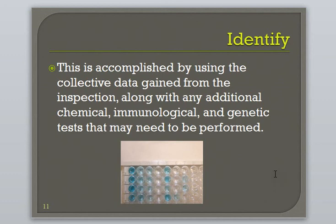The purpose of the five I's is to identify the types of microbes that were initially isolated. This is accomplished by gathering data from the inspection process as well as many other types of assays, such as ELISAs, DNA analysis, chemical tests, and more. From these tests, we can gather information on the metabolic functions, genetics, and more, which will help us to identify the microbe.